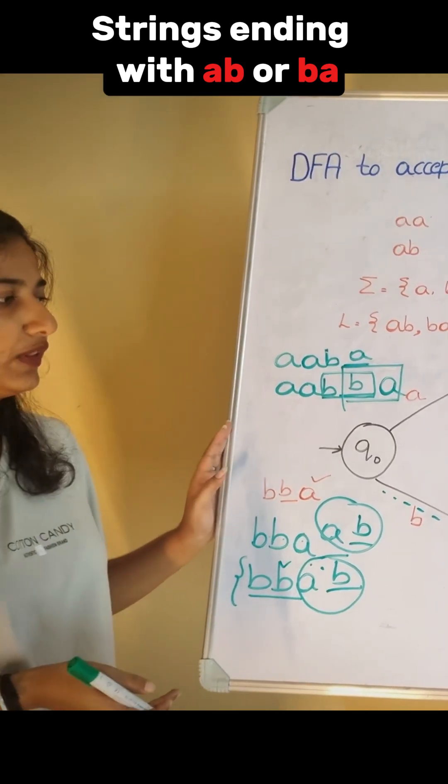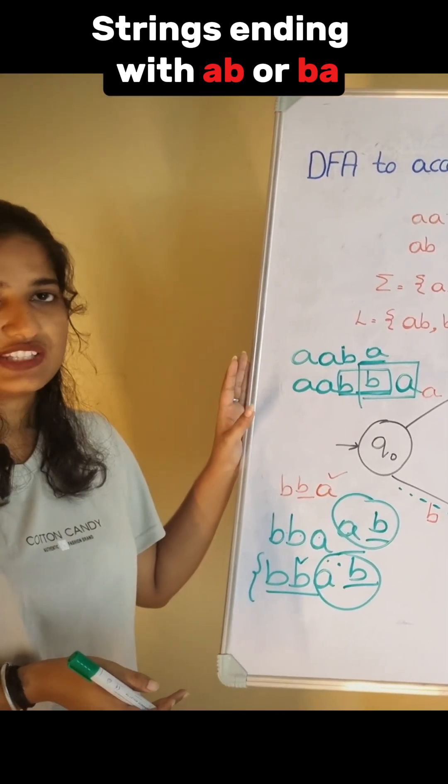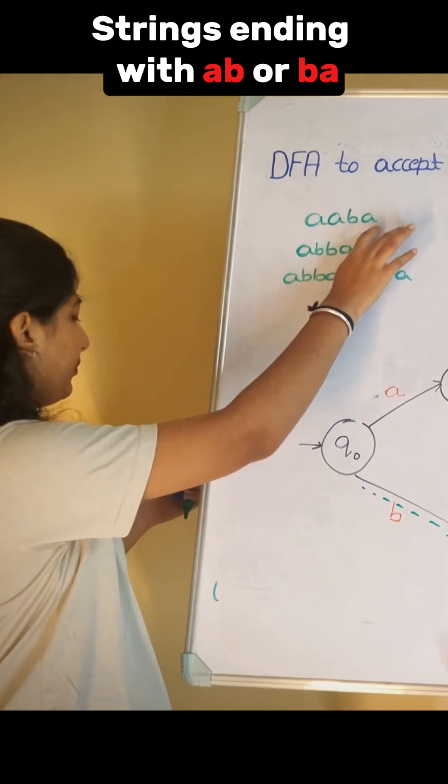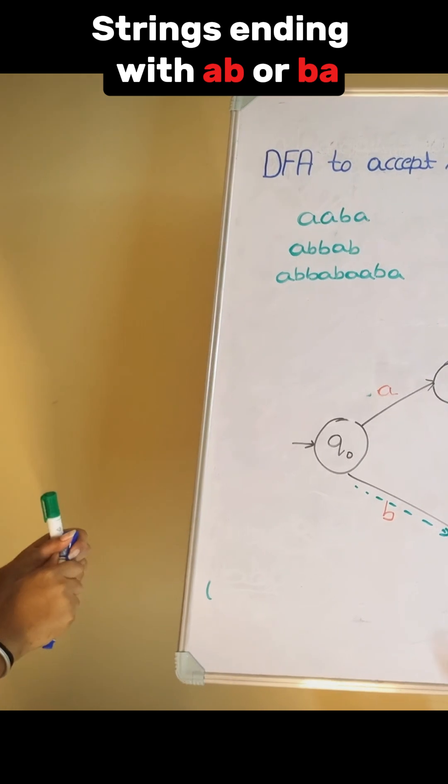Let's take one example and solve this. It will be easier for you to trace the transition diagram. The examples are like this: AABA. Let's solve this one first.